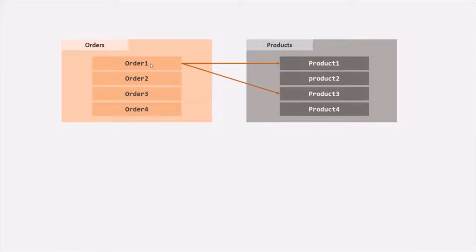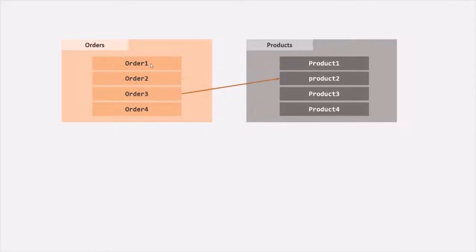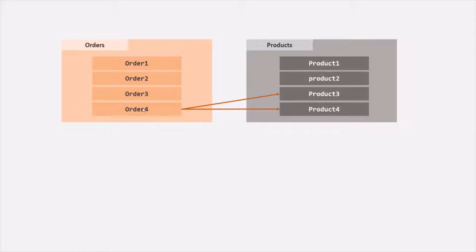In the same way, for the second order, the customer has purchased product-1 and product-4. For the third order, the customer purchased only one product. And for the fourth order, the customer purchased two products — product-3 and product-4. So in a single order we can have multiple products, and one product can be ordered in different orders. This means one order can have multiple products, and one product might have been purchased from multiple orders — giving us a many-to-many relationship between orders and products.